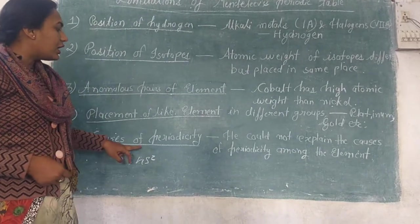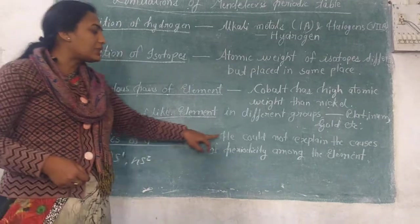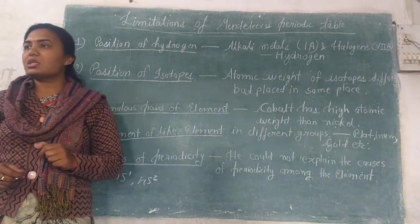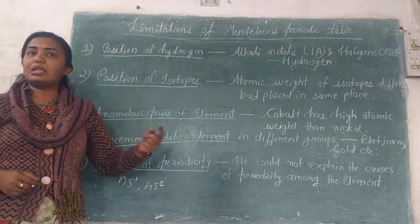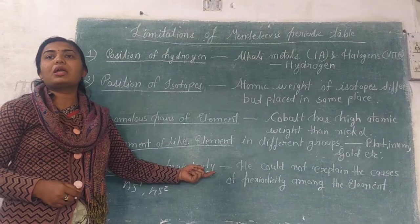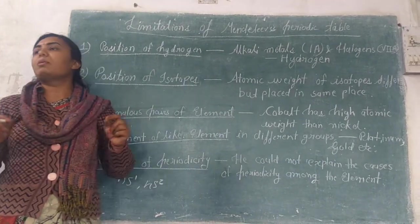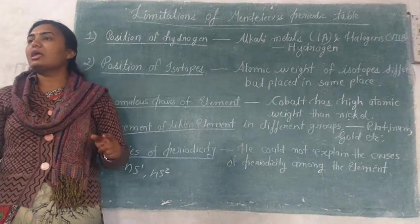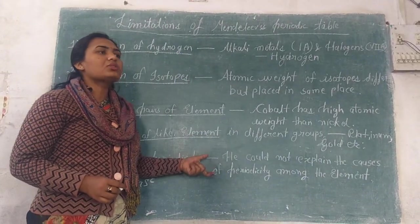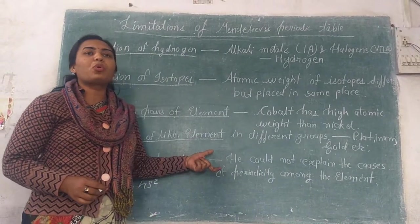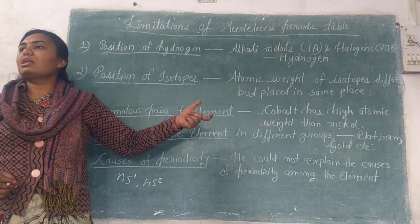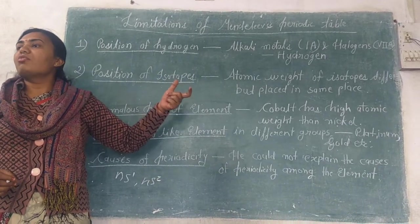Mendeleev arranged elements on the basis of atomic weight, not electronic configuration. Because of this, the periodic table could not explain the cause of periodicity. Based on these five points, Mendeleev's periodic table is considered to have failed.